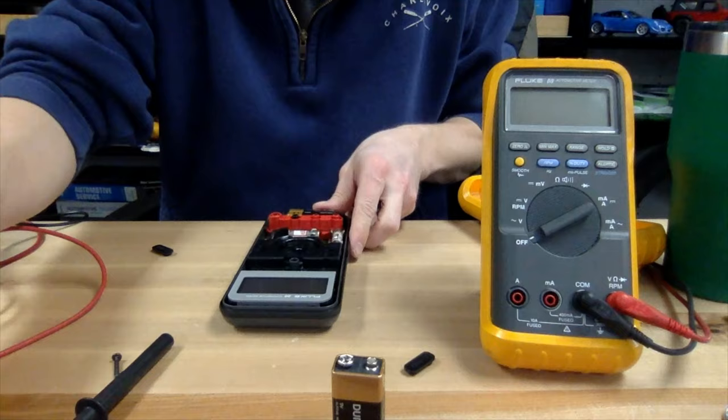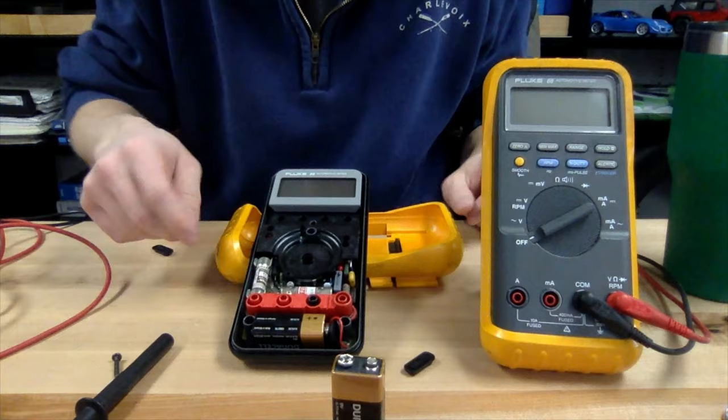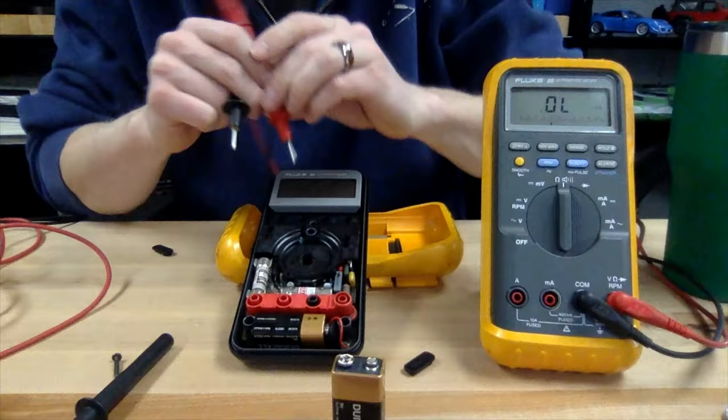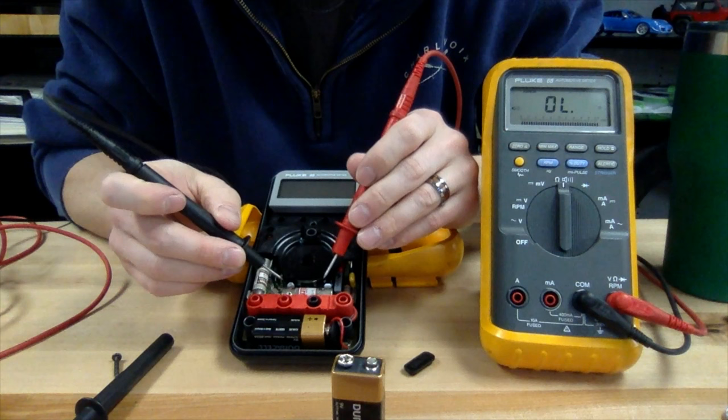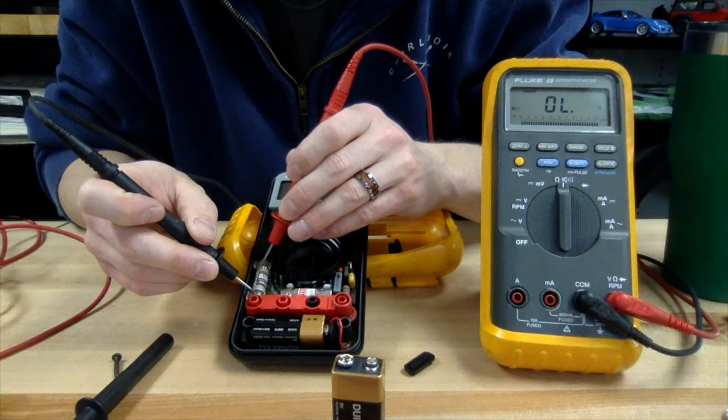If you look in the inside here, you'll see the two fuses, and we're going to set our known good multimeter to resistance and check these two fuses just like we did the test leads. It is important to note that the power is off on this meter. You never want to check resistance with the power on.